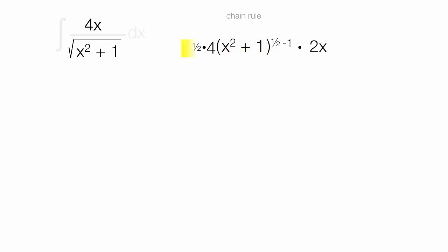1 half times 4 is 2. The new exponent, or the power of x squared plus 1 is negative 1 half. And I just pull this 2x down. I continue. 2 times 2x is 4x. This is looking up.